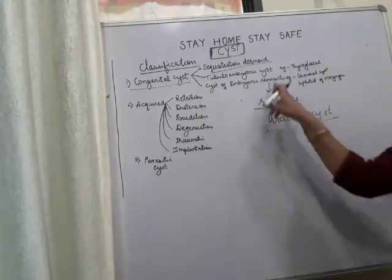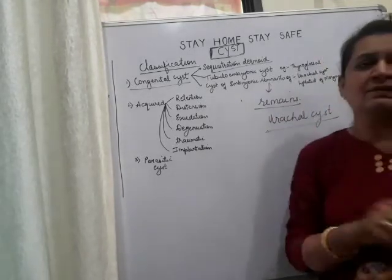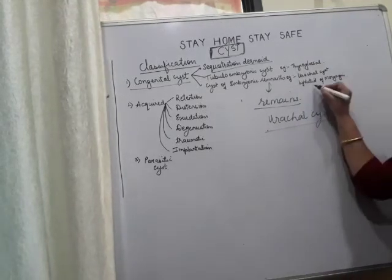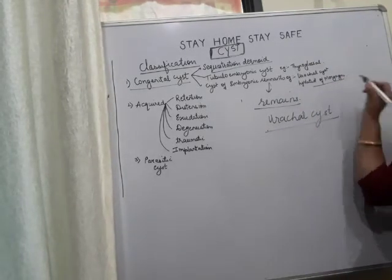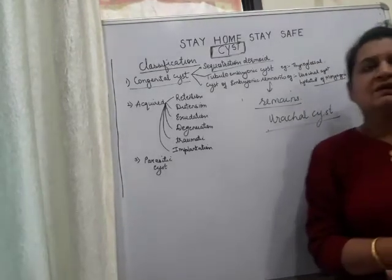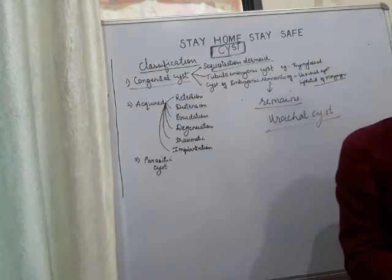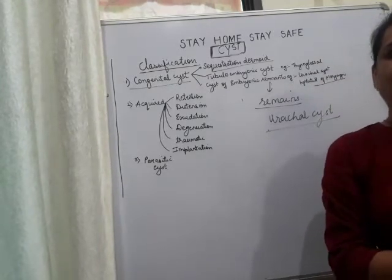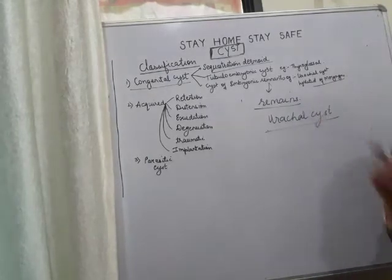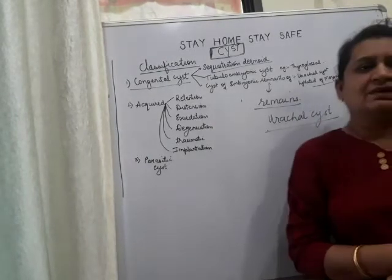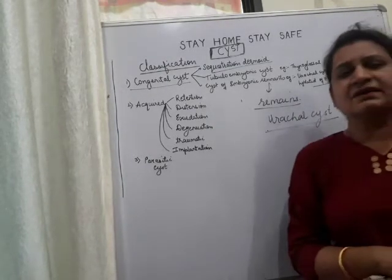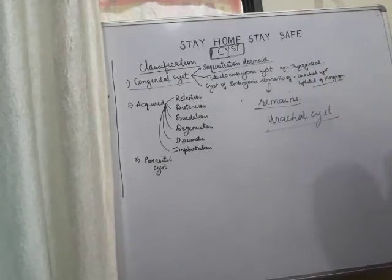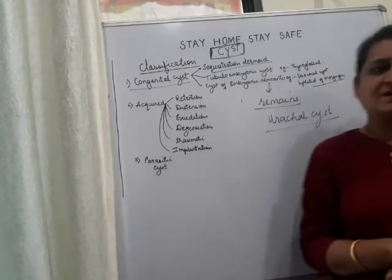Another example of an embryonic remnant cyst is the hydatid of Morgagni. This is a remnant of the Müllerian duct, which presents on the upper pole of the testes and is attached to the tunica vaginalis.